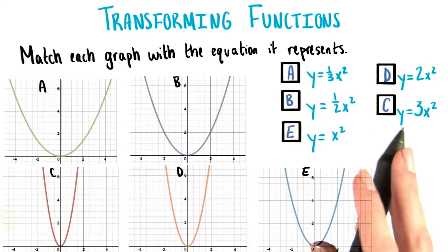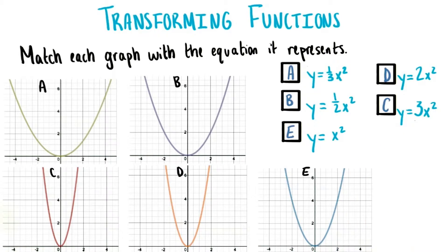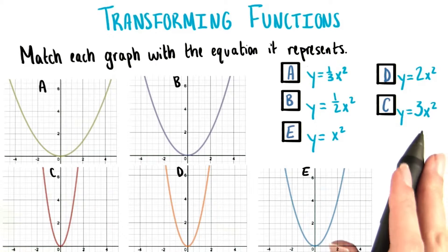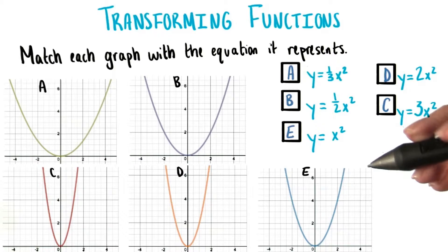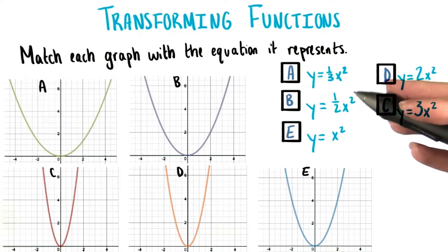However, let's think about this from a vertical point of view instead now. Instead of thinking about these as making graphs wider or skinnier, we can think about these coefficients actually making the graph taller or shorter.